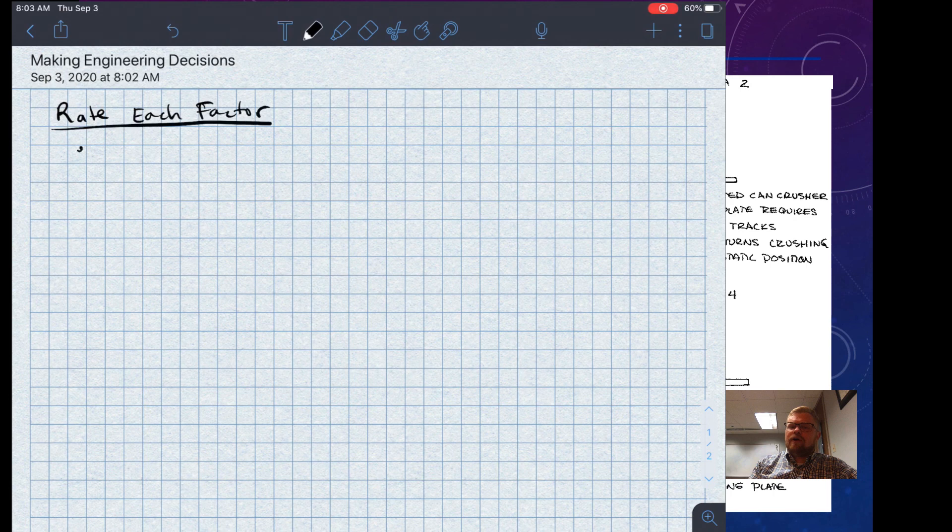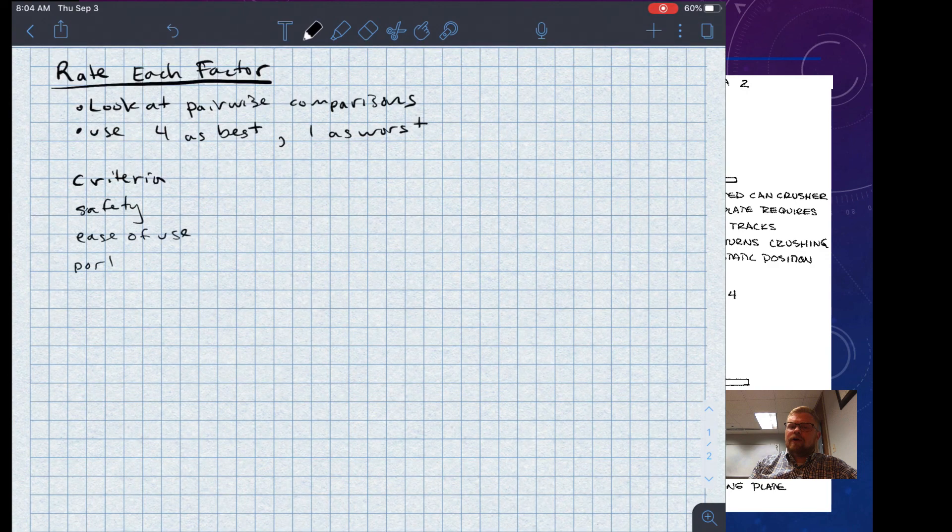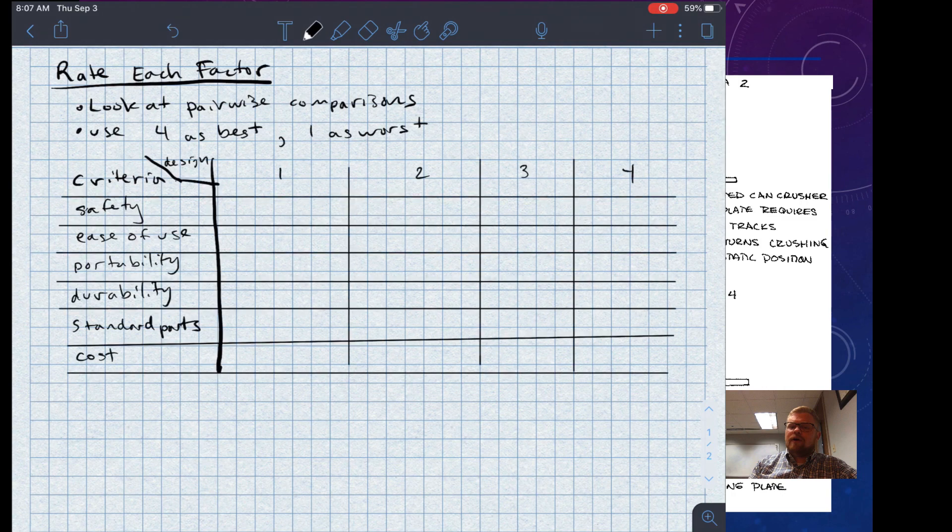So let's start by rating each factor. We're looking at pairwise comparisons, essentially deciding which idea is the best. I'm going to use the number four to represent the best and the number one to represent the worst. So I'll make this matrix, which has my criteria on the left-hand side and my four different design ideas on essentially the x-axis. And so let's look at safety first. Which of these ideas do you think is the safest? Well, I think that the safest one is probably the arm-powered can crusher, design idea four. The next safest is probably the foot-operated can crusher, design idea two. Then maybe the spring-loaded can crusher. And then lastly, the gravity can crusher, because you really don't want to get your hand underneath that crushing plate.